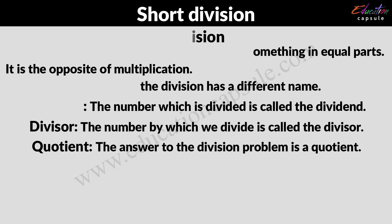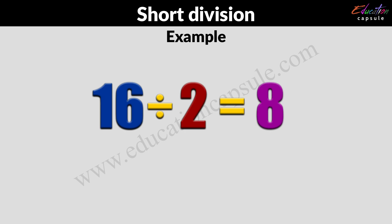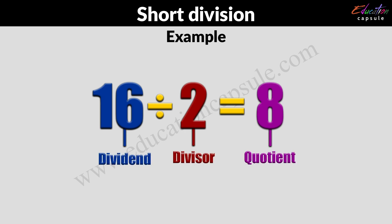For example, if we need to divide 16 by 2 to get the answer 8, then 16 here would be the dividend, 2 would be the divisor, whereas 8 would be the quotient.